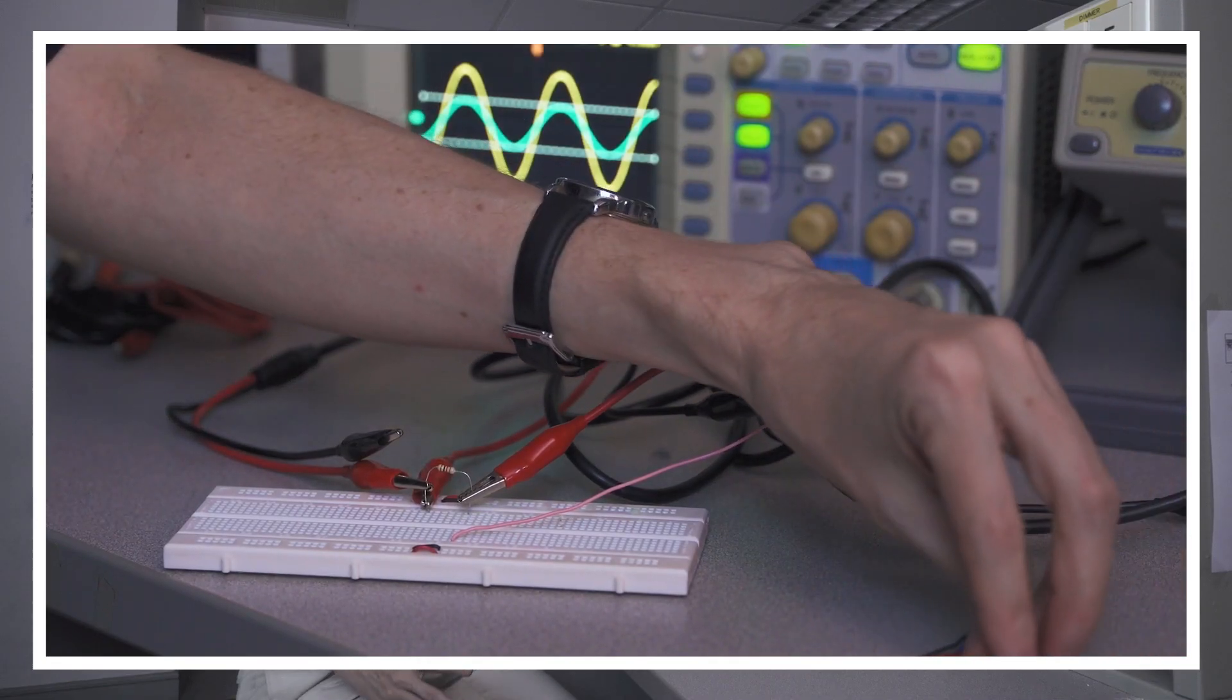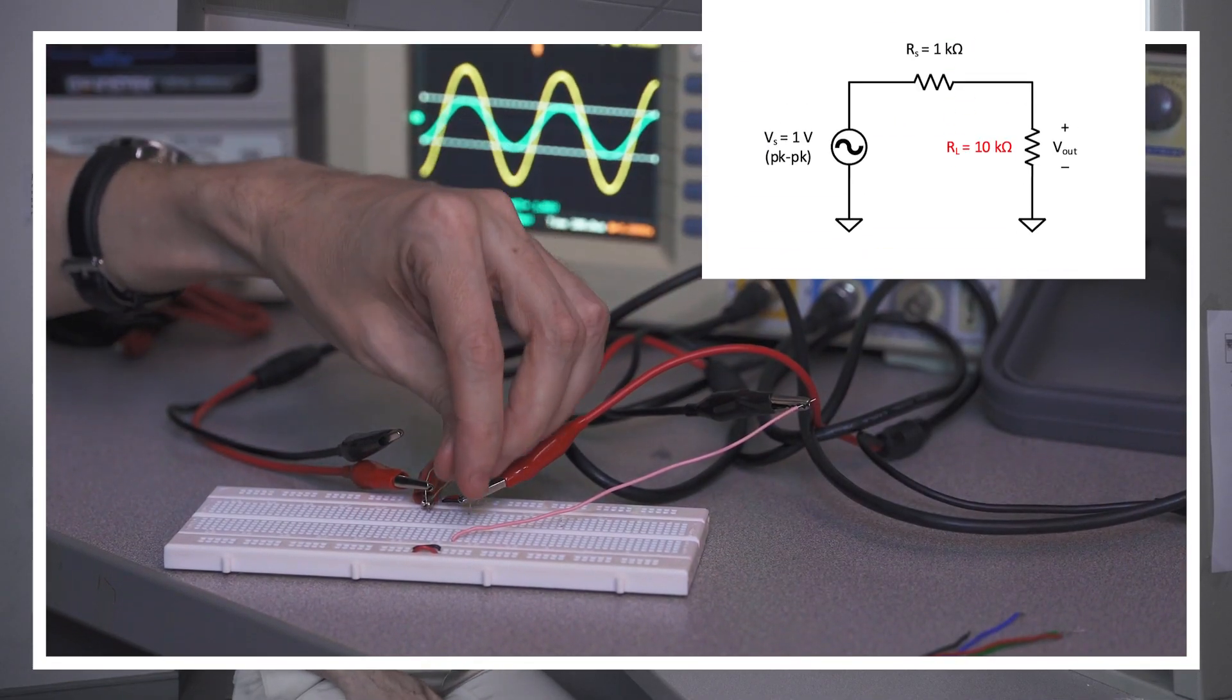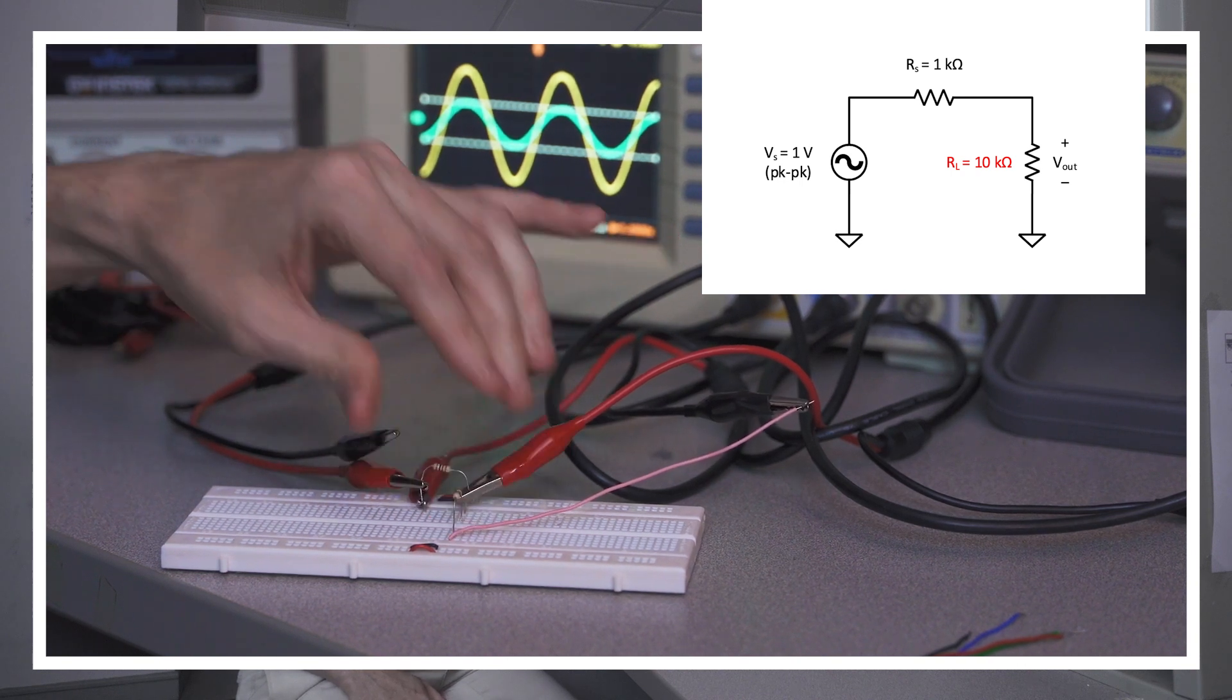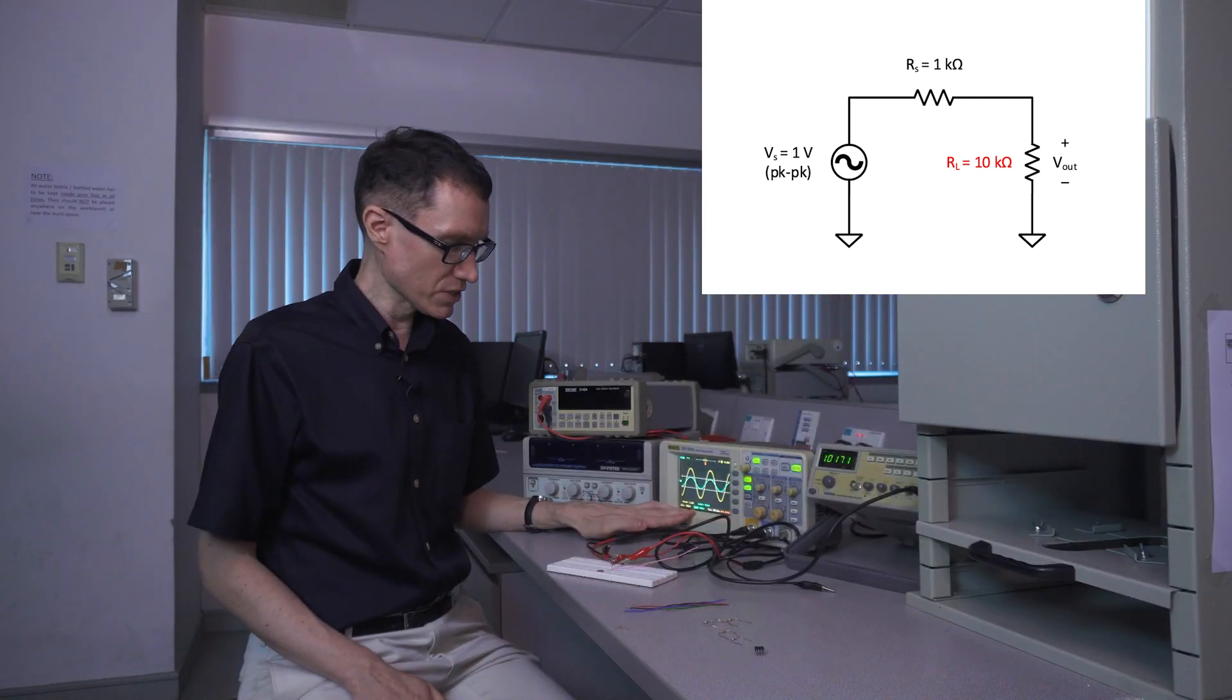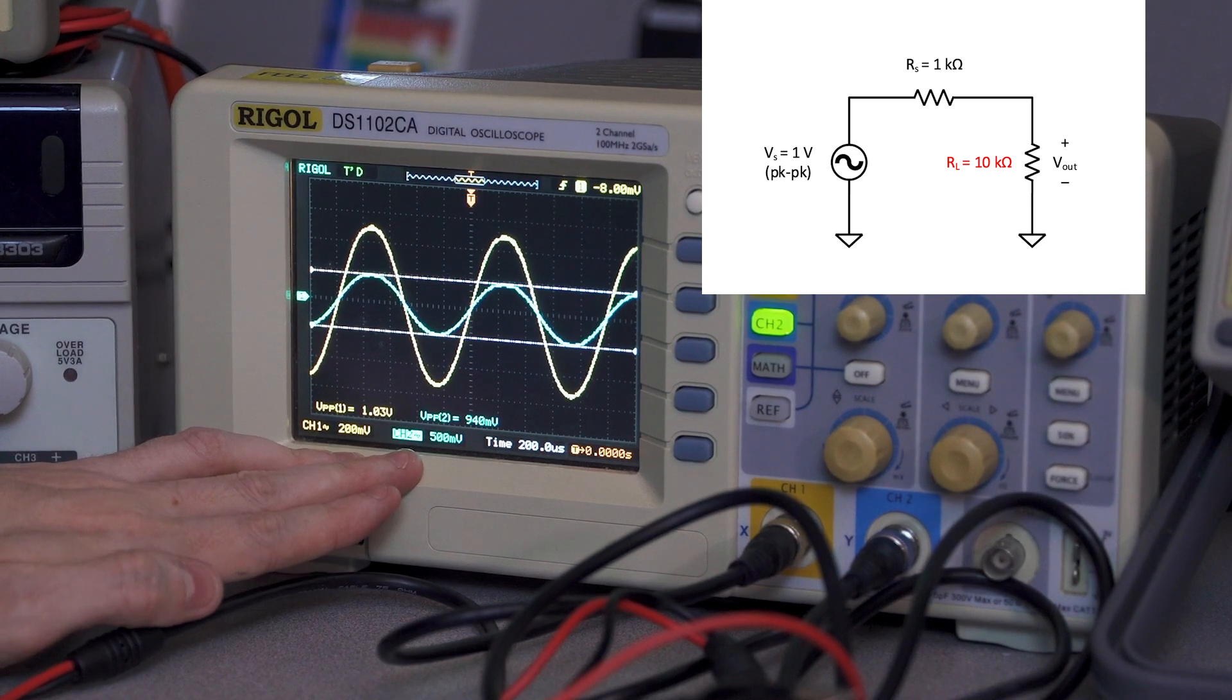Let's see what happens when we substitute that 1 kiloohm load resistor with a 10 kiloohm load resistor. The peak to peak voltage is now 0.94 volts.